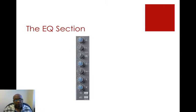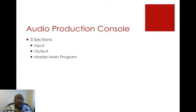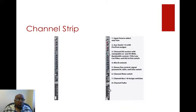The audio production console has basically three sections: an input section, an output or master section, and a main master program. The channel strip is probably the most basic element of the audio production console, and once you understand each element of a channel strip, you can operate the entire console more easily.